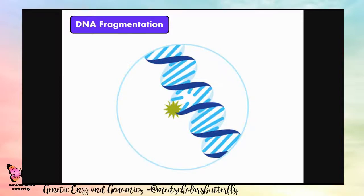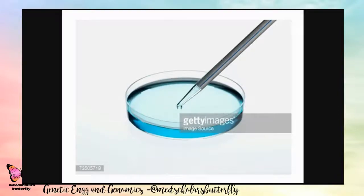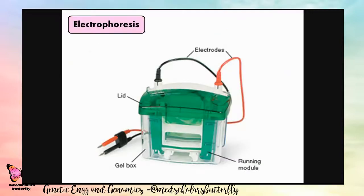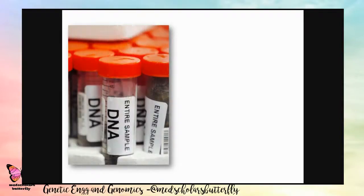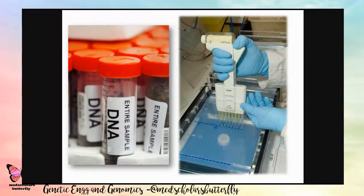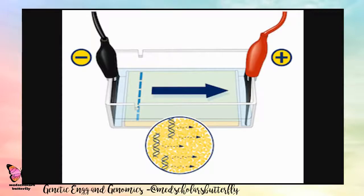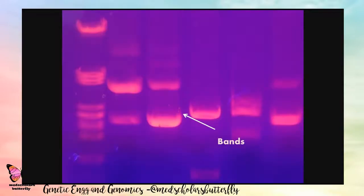The third step is DNA fragmentation. A tiny bit of the DNA sample is taken and treated with restriction endonuclease, which cuts the DNA at several locations to produce many pieces of DNA having different lengths. This technique is also known as Restriction Fragment Length Polymorphism, or RFLP, also called restriction digestion. The fourth step is electrophoresis, where DNA samples are loaded into agarose gel electrophoresis. A charge is applied whereby the negatively charged fragments move to the positive pole, and due to these movements we get the formation of bands.